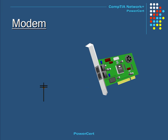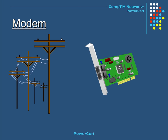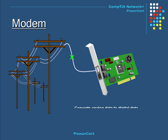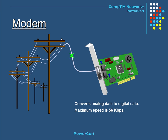A dial-up modem is a device that allows a computer to transmit data over normal telephone lines. The data coming in from telephone lines is analog, while the data in a computer is digital. When analog data comes in from telephone lines, the modem's job is to convert it into digital form so the computer can understand it. The maximum speed of most modems today is 56 kbps.